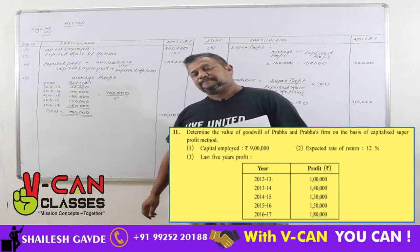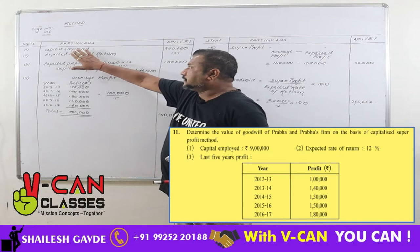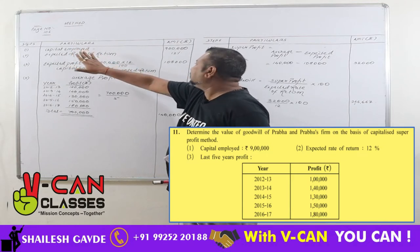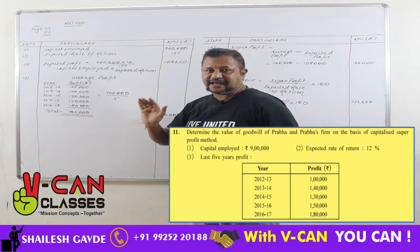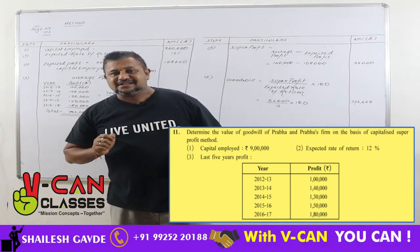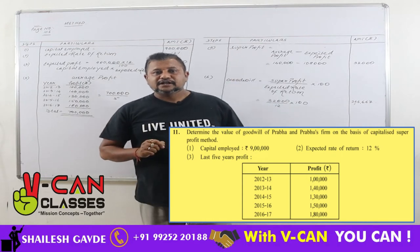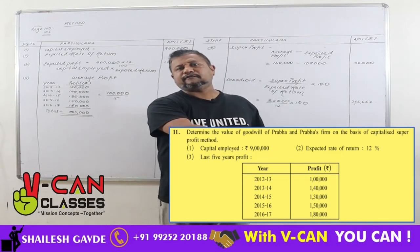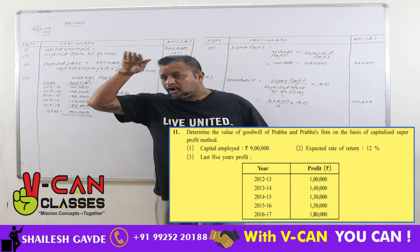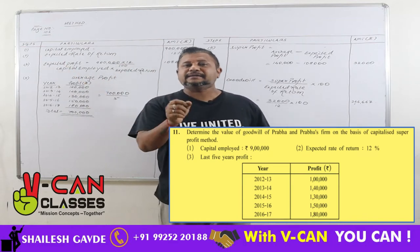The method applicable here is capitalization of super profits. The first step — capital employed — is directly given as 9 lakhs. Under this method, till we calculate super profit, all steps of the super profit method will remain the same.